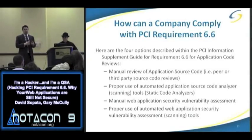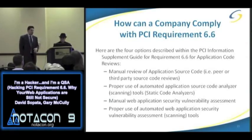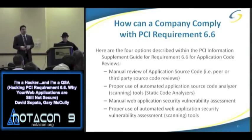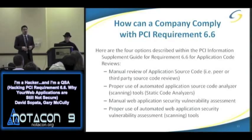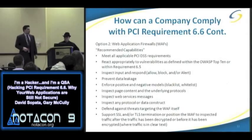So how can a company comply with requirement 6.6? There are two general things you can do. You can perform some sort of code review — which includes manual review of source code, static code analysis using a tool, or web application vulnerability assessments. That can be manual, where you're actually putting information in, or you can use a scanning tool. The other option is to deploy a WAF.